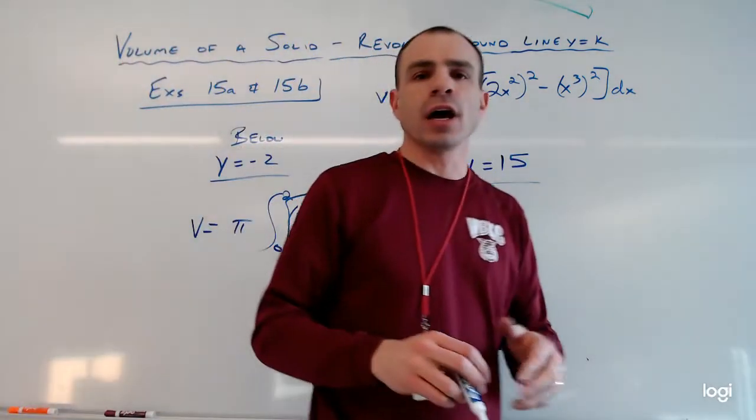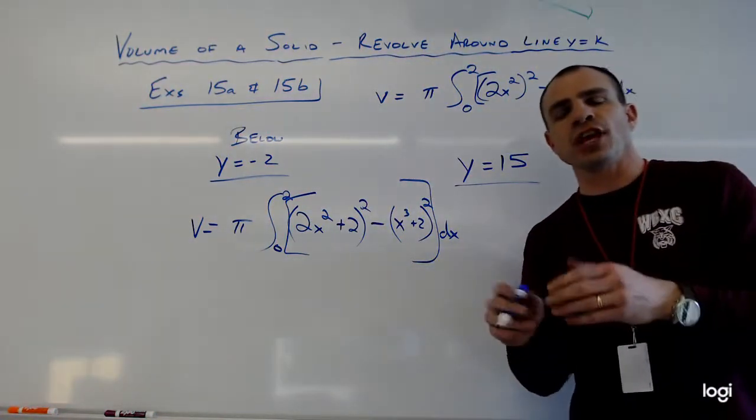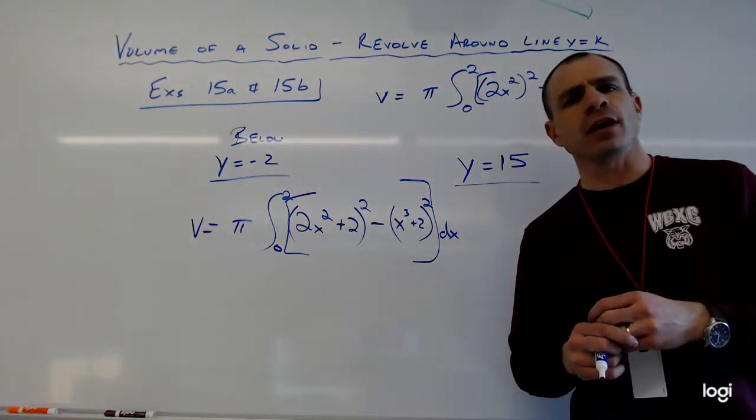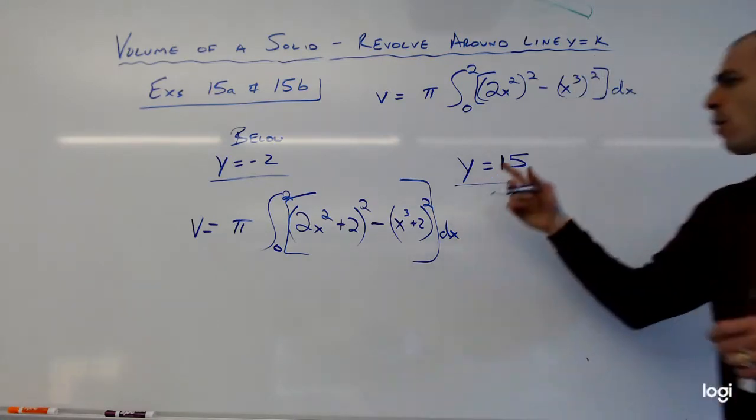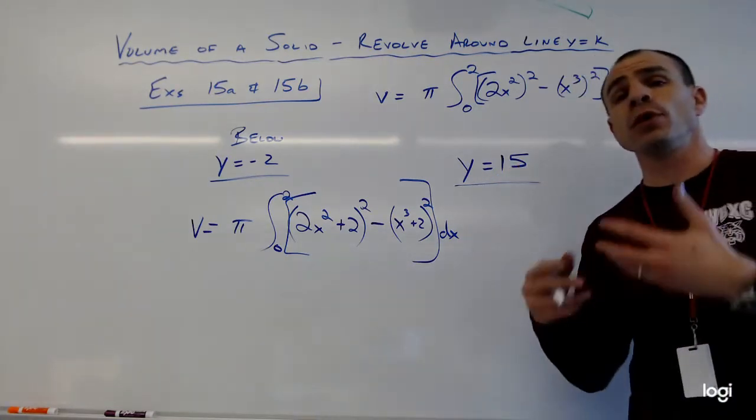Remember our zone, it was that wedge shape and it maxed out, I believe, at Y equals 8. So we're looking at Y equals 15. So this is something which is above our zone.